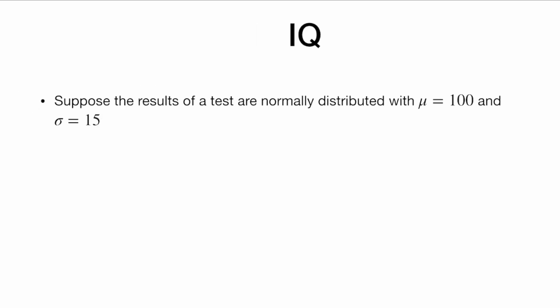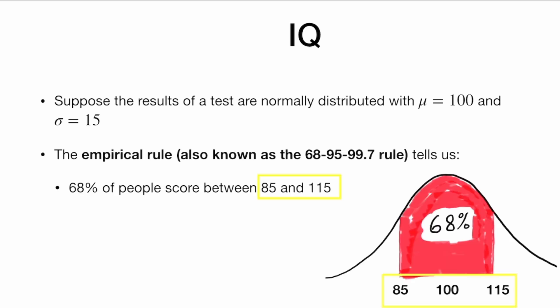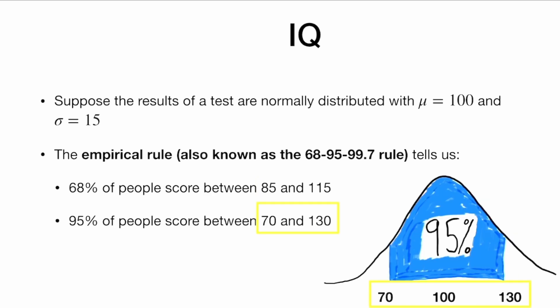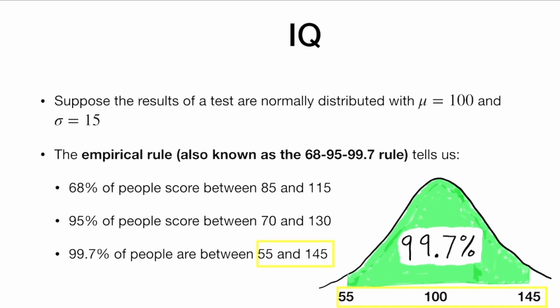Let's do one more example to get used to this: IQ. Suppose the results of an IQ test are normally distributed with mean 100 and sigma equals 15. The empirical rule tells us that 68% of people score between 85 and 115, 95% of people score between 70 and 130, and 99.7% of people score between 55 and 145.